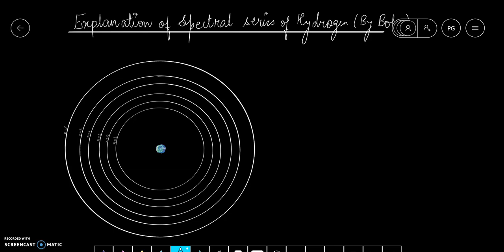This is the hydrogen atom with different orbitals n equals 1, 2 and so on. We have derived this formula, which is the wave number, where n1 is the inner orbital and n2 is the outer orbital.